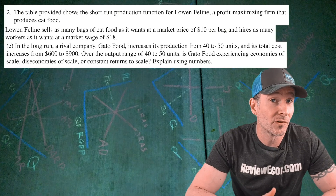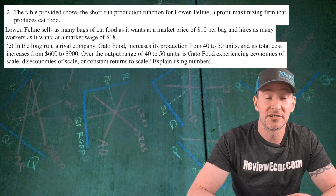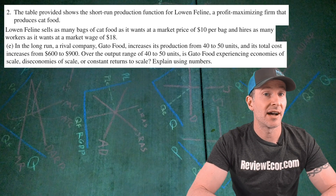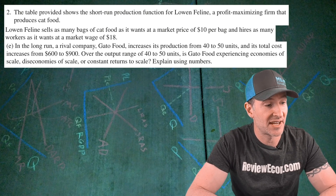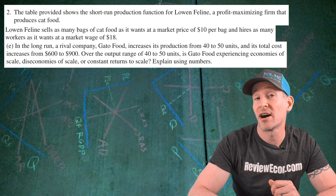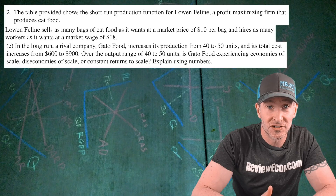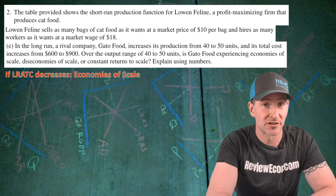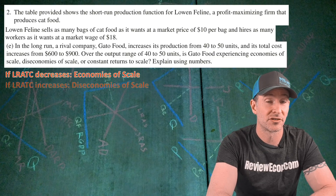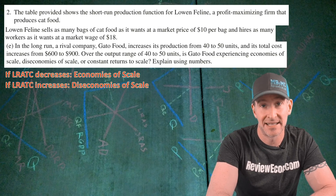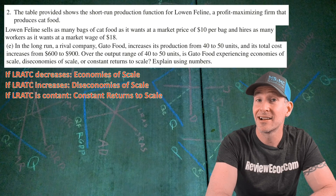For part E, we are told that in the long run, a rival company called Gato Food increases its production from 40 units of output to 50 units of output. At the same time, Gato Food's total costs increase from $600 up to $900. We are asked if Gato Foods is experiencing economies of scale, diseconomies of scale, or constant returns to scale over this range. This question is about the long-run average total cost curve: if LRATC is decreasing, it's economies of scale; if increasing, diseconomies of scale; if constant, constant returns to scale.